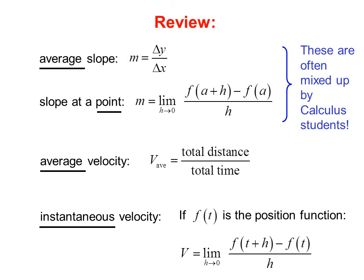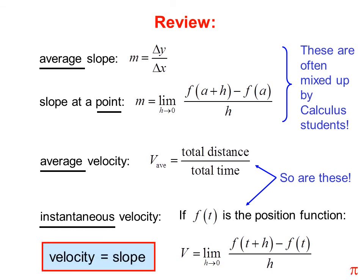Instantaneous velocity: if f(t) is the position function, then v equals the limit as h goes to 0 of f(t plus h) minus f(t) over h. These are often mixed up also. When I said the first test, I meant the first test on this material; it may or may not be your first test. In general, velocity equals slope. You find velocity and find slope the same way.